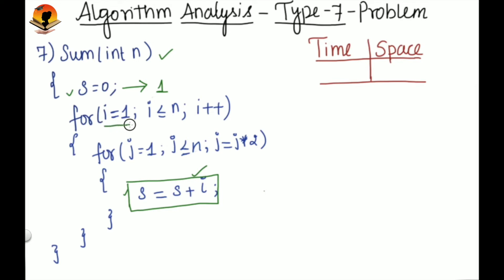Here this i starts from 1 and then it will be incremented by 1 till i is less than or equal to n. So the outer loop will run from 1 to n, that is n times.